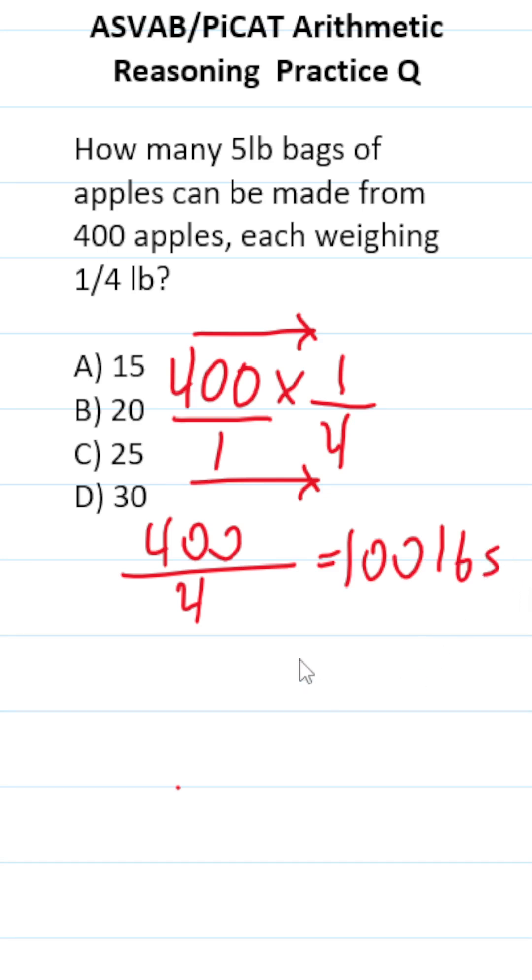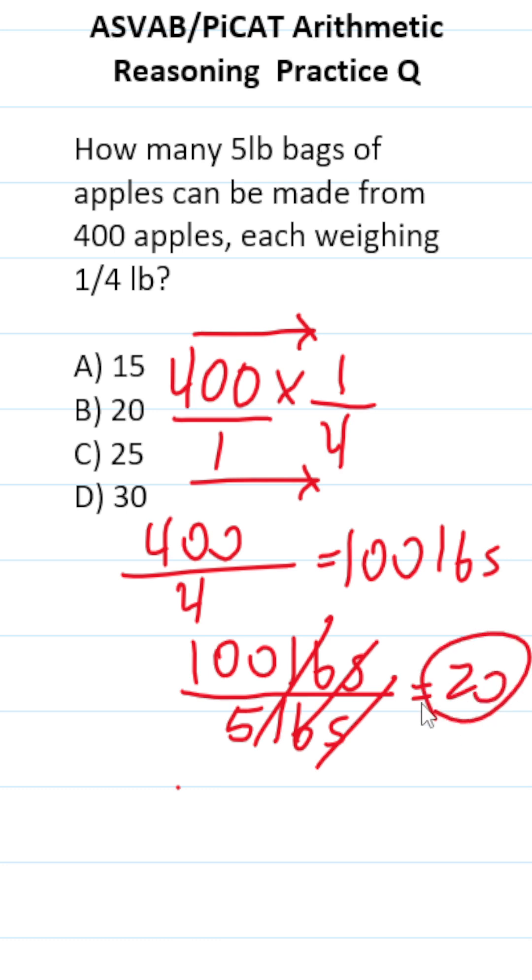From the 100 pounds of apples, we're making five-pound bags. So we're going to divide this by five pounds for each bag. Cross out our units. 100 divided by five is 20. So you can make 20 five-pound bags of apples from the 400 apples that each weigh a quarter of a pound.